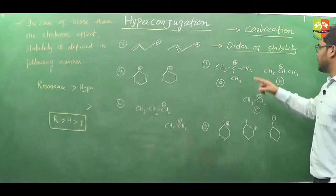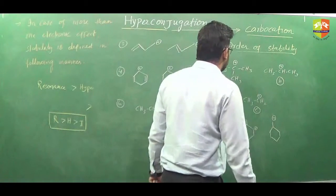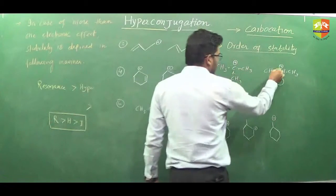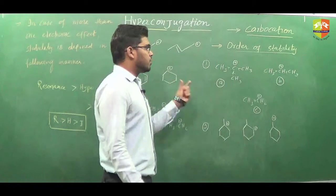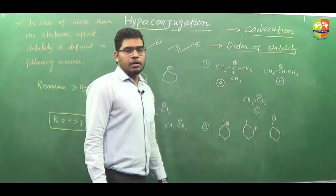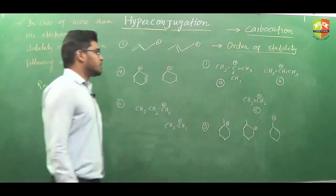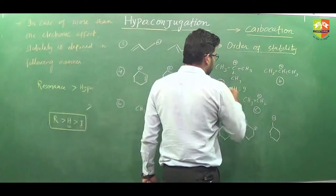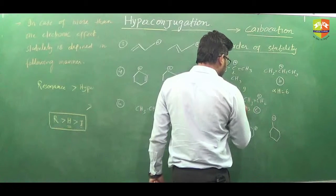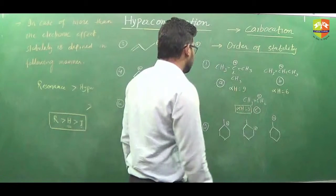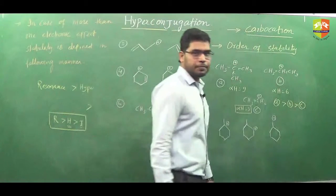In all these molecules only hyperconjugation is possible. We can also consider I-effect here, but since hyperconjugation is also possible, we will consider stability due to hyperconjugation because hyperconjugation is a more dominating effect than inductive effect. Number of alpha hydrogens: nine, six, and three respectively. So more number of alpha hydrogens means more stability; stability order is A > B > C.